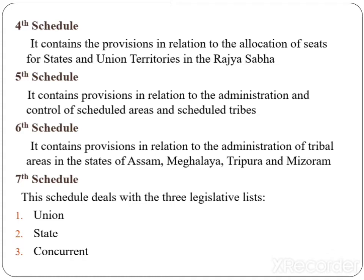Fourth schedule: It contains provisions in relation to the allocation of seats for states and union territories in Rajya Sabha. Fifth schedule: It contains provisions in relation to the administration and control of scheduled areas and scheduled tribes.